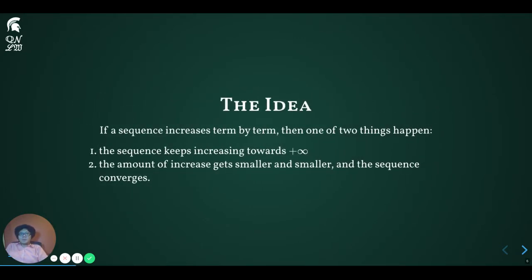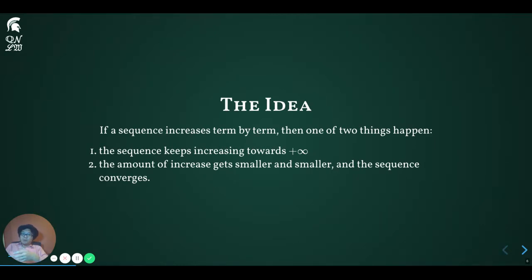The basic idea is somewhat intuitive. If a sequence is always increasing, then one of two things should happen. First, the value attained by the sequence can just keep growing without bound — in this case, the sequence is unbounded and hence must diverge. Second, the sequence can be bounded above. Imagine there being a ceiling above which the sequence cannot grow. As the sequence is increasing, every step forward means the amount of room available to grow gets smaller and smaller, and so the amount of growth should eventually go down to zero and the sequence should converge.